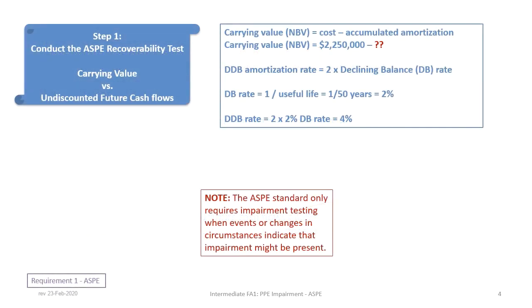The first step is conducting the ASPE recoverability test, which involves comparing the carrying value to the undiscounted future cash flows. To begin, we need to calculate the carrying value of the asset. The carrying value, also known as net book value (NBV), is simply cost minus accumulated depreciation. Since the accumulated depreciation is not given, we need to calculate it.